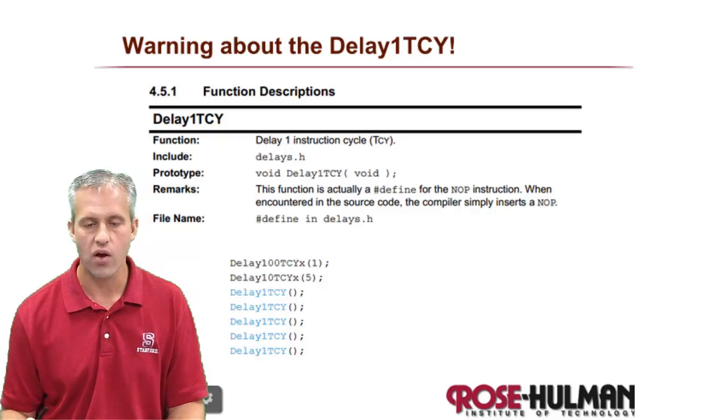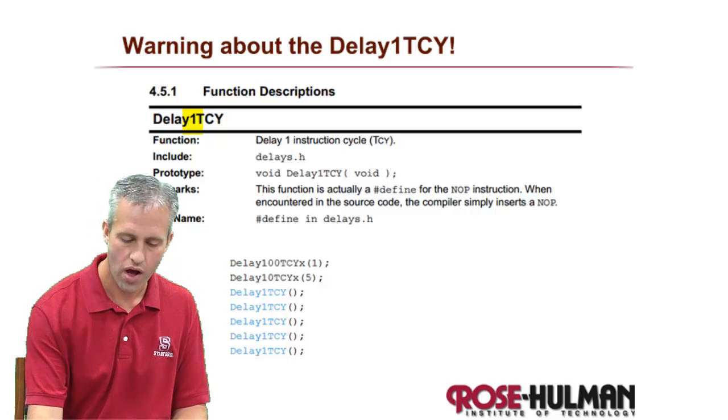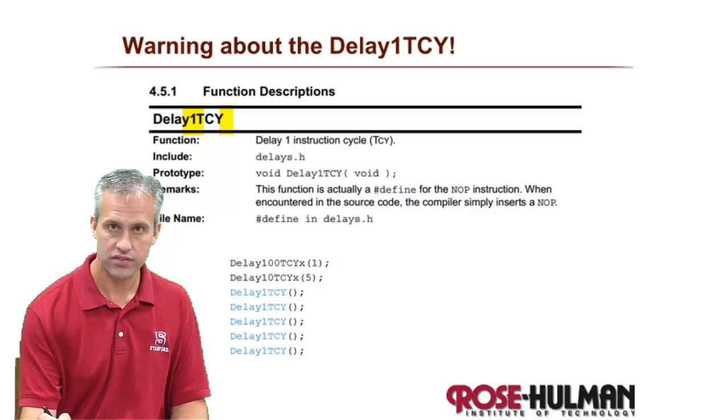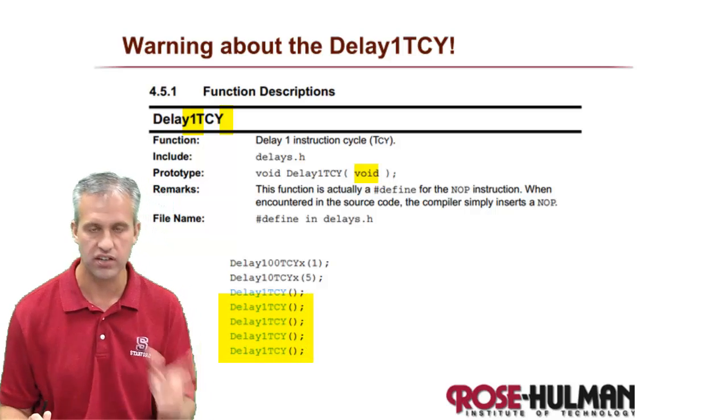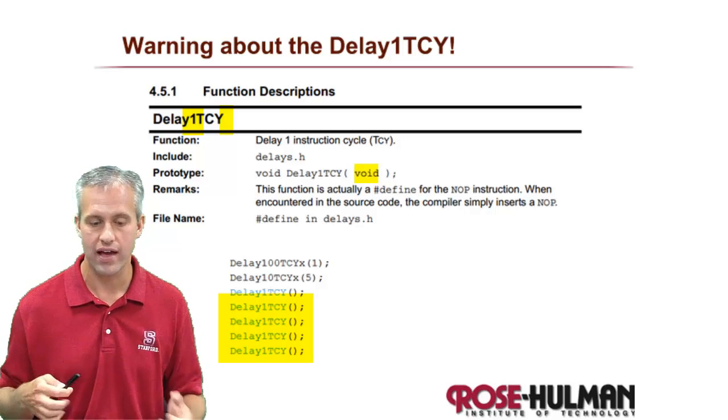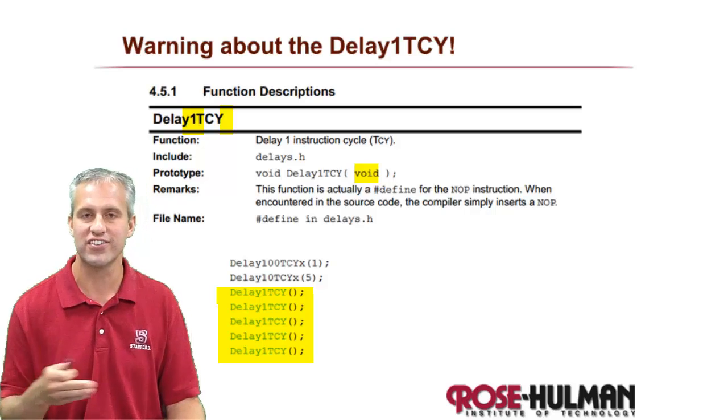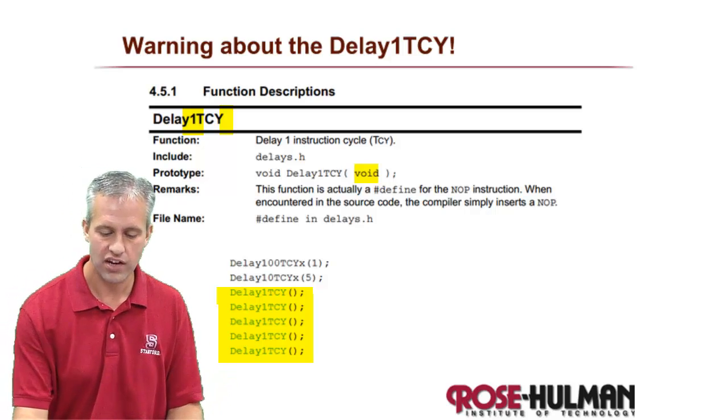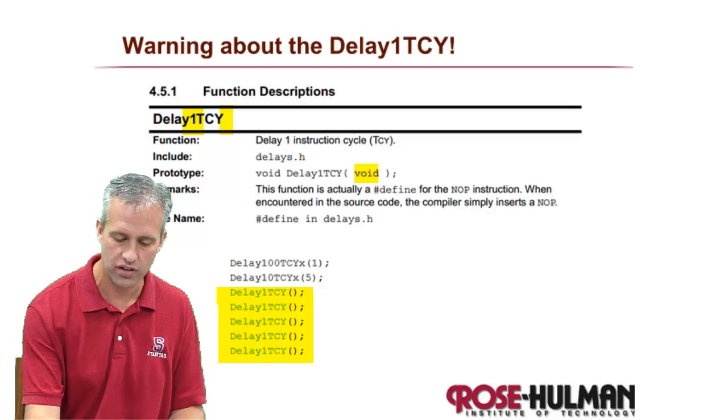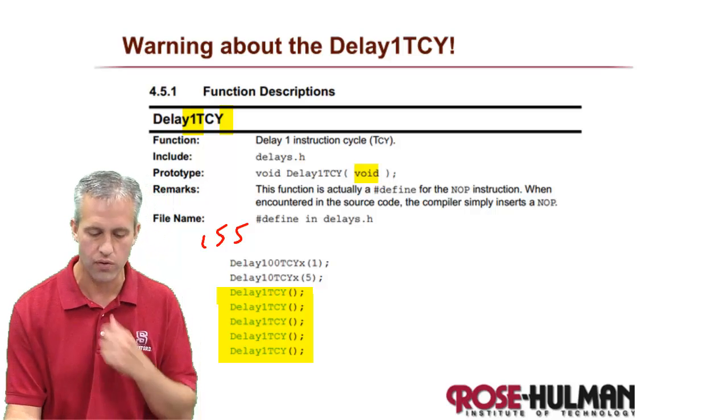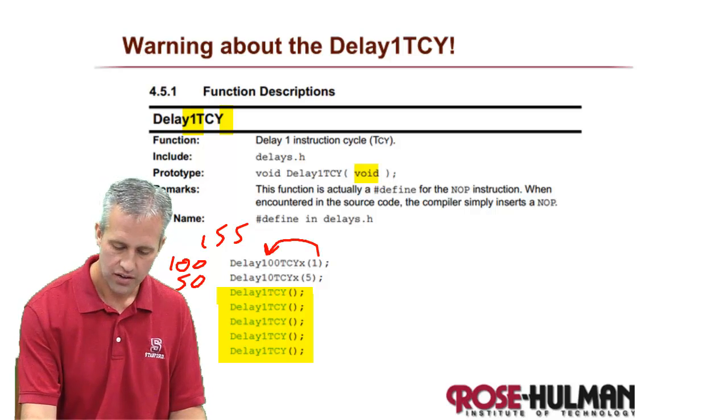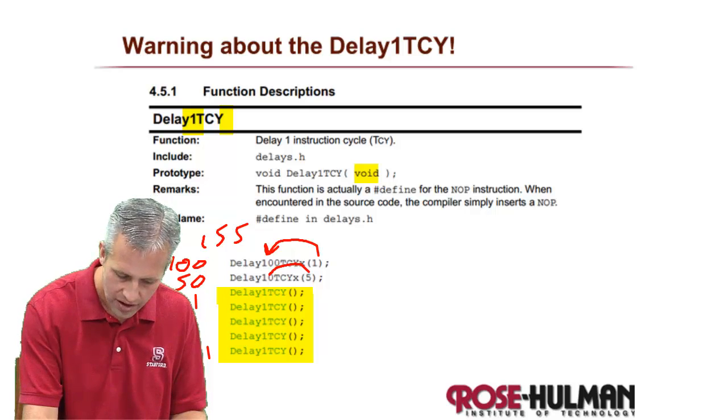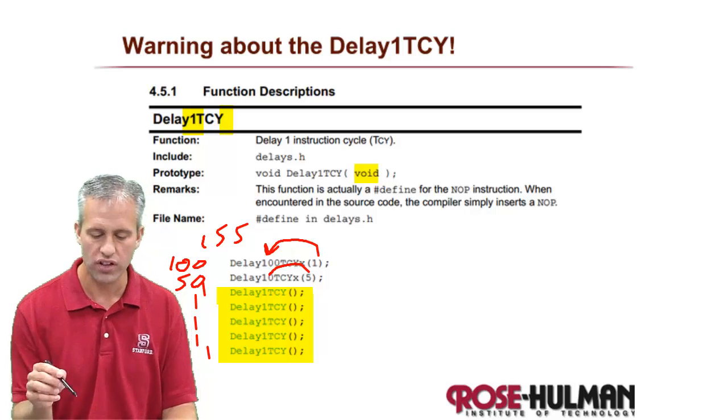And another thing I wanted to warn you about is that the 1 for 1 is different. Note that there is no x and there is no parameter. So you don't pass anything into it. It actually just looks like this. So you just say delay 1, tcy. And the reason for that is because if they'd had a parameter, it would have taken more than one instruction cycle just to pass a parameter. So they couldn't do that. So they actually had to write it out individually. So if you wanted to delay for 155, you could delay for 100. So 1 times 100 and then 50. So 5 times 10. But then the last five, you just have to do one at a time. So delay 1 is different. I just wanted to warn you about that.